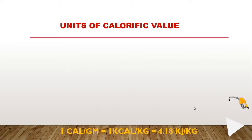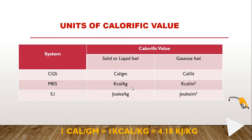What are the units of calorific value? Calorific value is determined in systems like CGS, MKS, or SI. In CGS, for solid and liquid fuels it is calorie per gram, and for gaseous fuel it is calorie per liter. In MKS, it is kilocalorie per kilogram for solids and liquids, and kilocalorie per cubic meter for gases. In SI, it is joules per kilogram for solid and liquid, and joules per cubic meter for gaseous fuel. The relation is: 1 calorie per gram equals 1 kilocalorie per kilogram, which equals 4.18 kilojoules per kilogram.